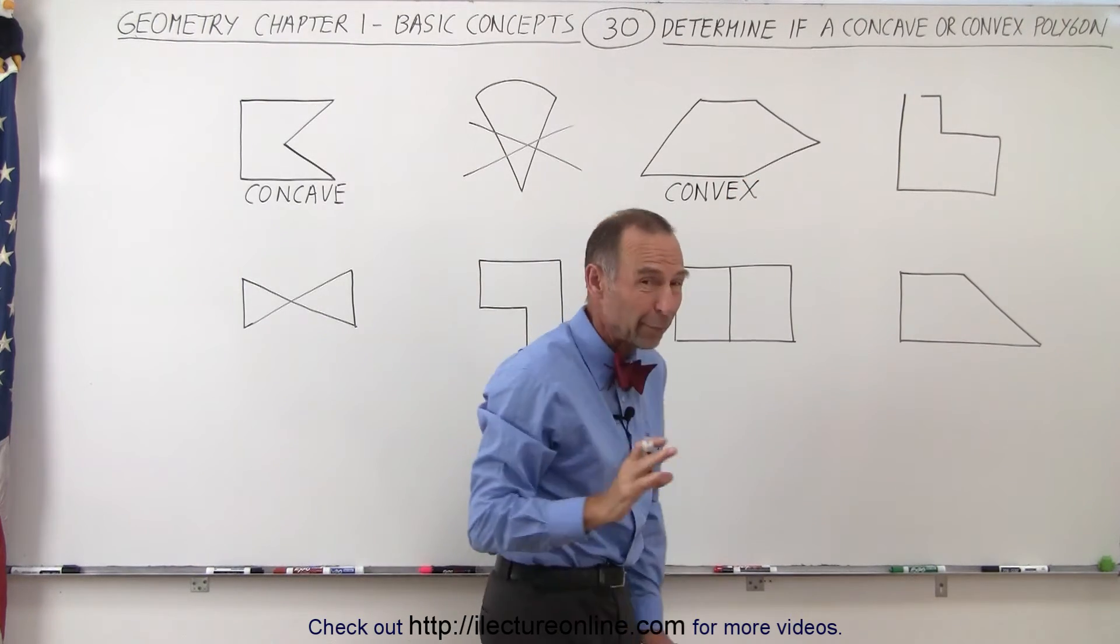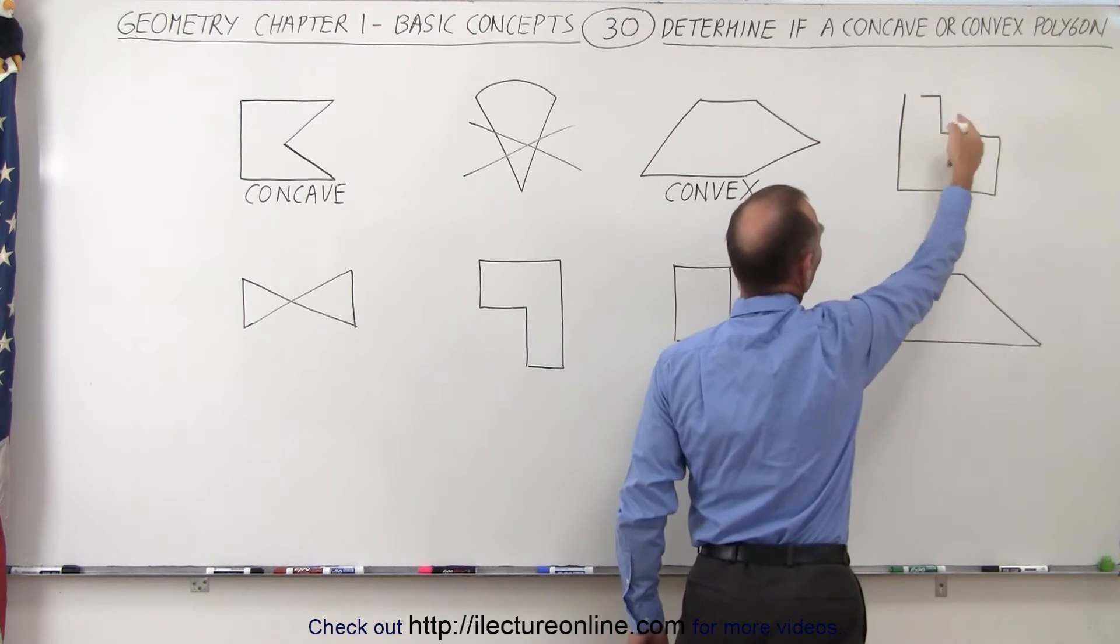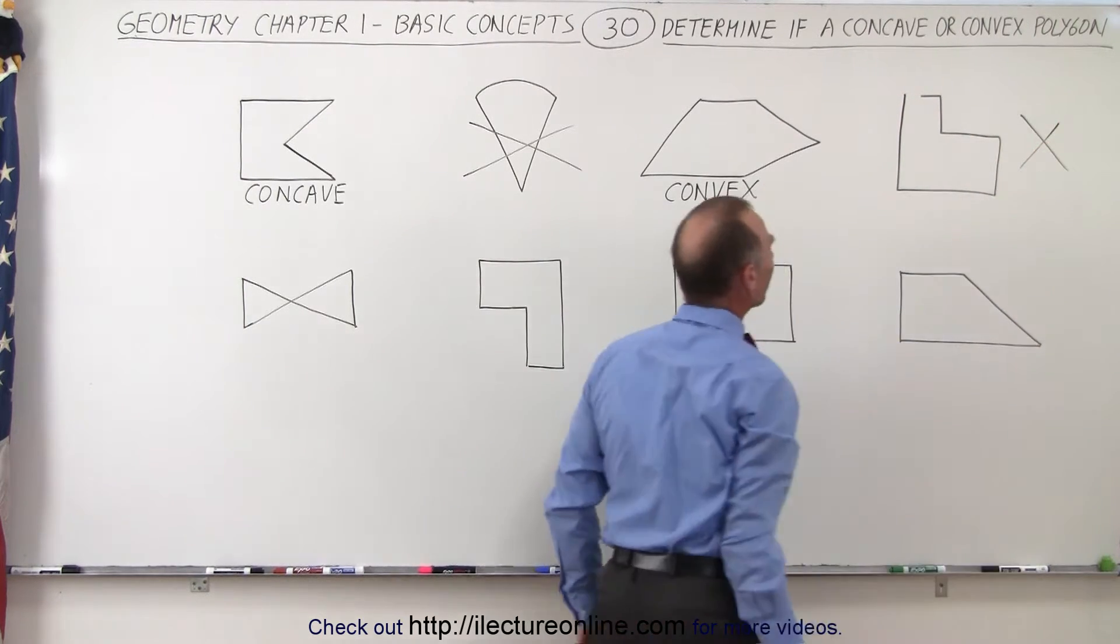Here again it looks like we have a polygon, but notice there's a little piece missing of this line segment, so it doesn't completely enclose. So we can say this is not a polygon.